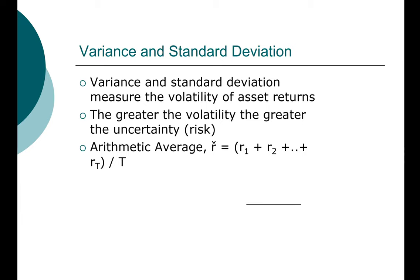In order to compute variance and standard deviation, we first have to compute the arithmetic average. To compute the average is relatively straightforward. You take the return in year 1, year 2, however many years. So you have T years of return, you add it up and you divide it by the number of years. It's a simple arithmetic average.